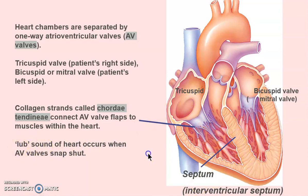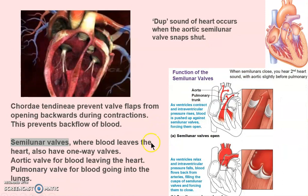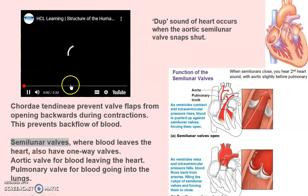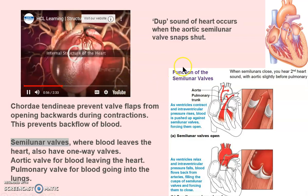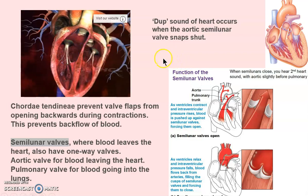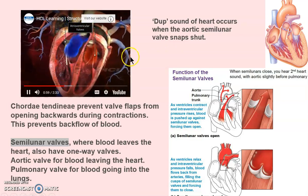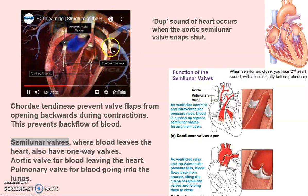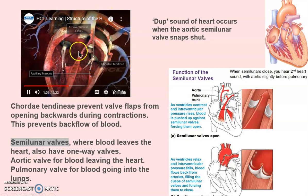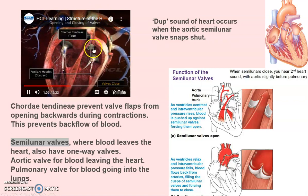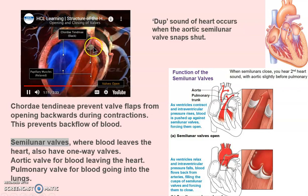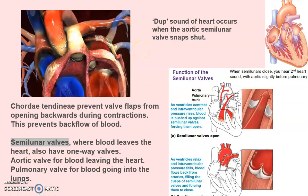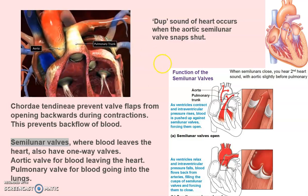We saw the interventricular septum just a moment ago. Now let's look at the semi-lunar valves — they prevent backflow. The blue is deoxygenated blood going to the lungs, red is oxygenated going to the body. Watch the semi-lunar valves: open, close, open, close. That's where you get the 'dub' sound when listening with a stethoscope.